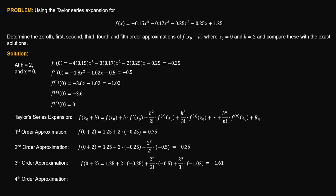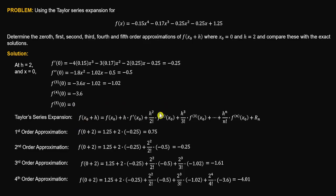For the fourth order approximation, we get negative 4.01. For the fifth order approximation, it is the same as the fourth order because the fifth derivative at x = 0 is equal to 0 — adding a zero quantity means negative 4.01 plus 0 is still negative 4.01. Therefore, the fourth order approximation up to the nth order approximation are all equal.